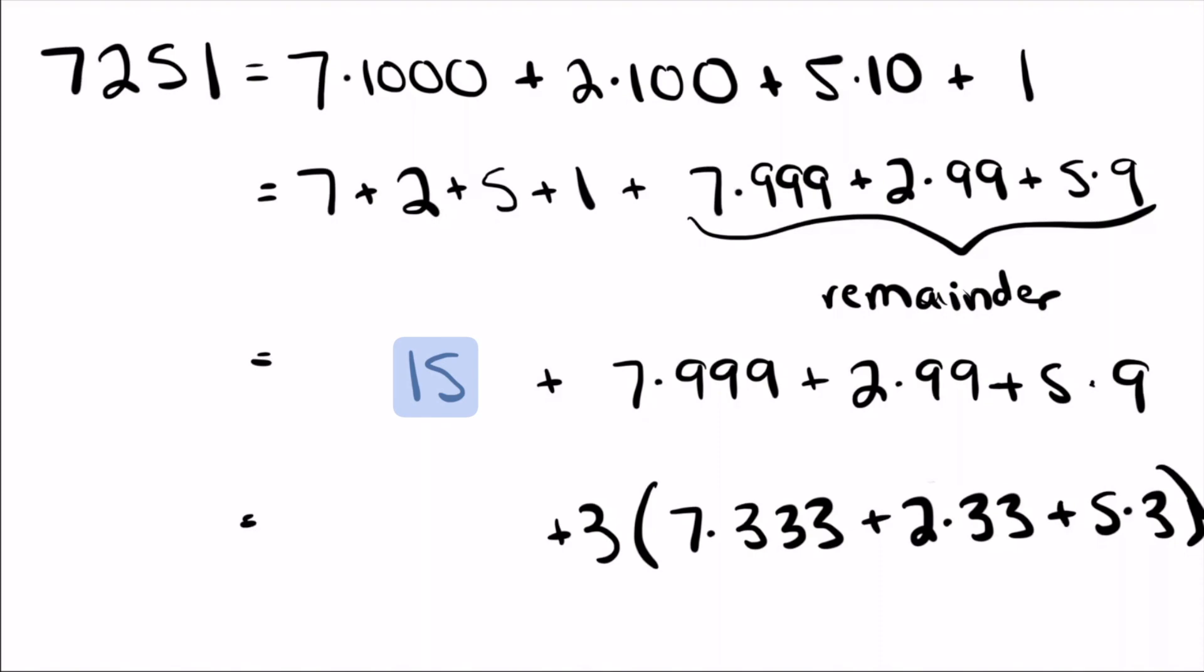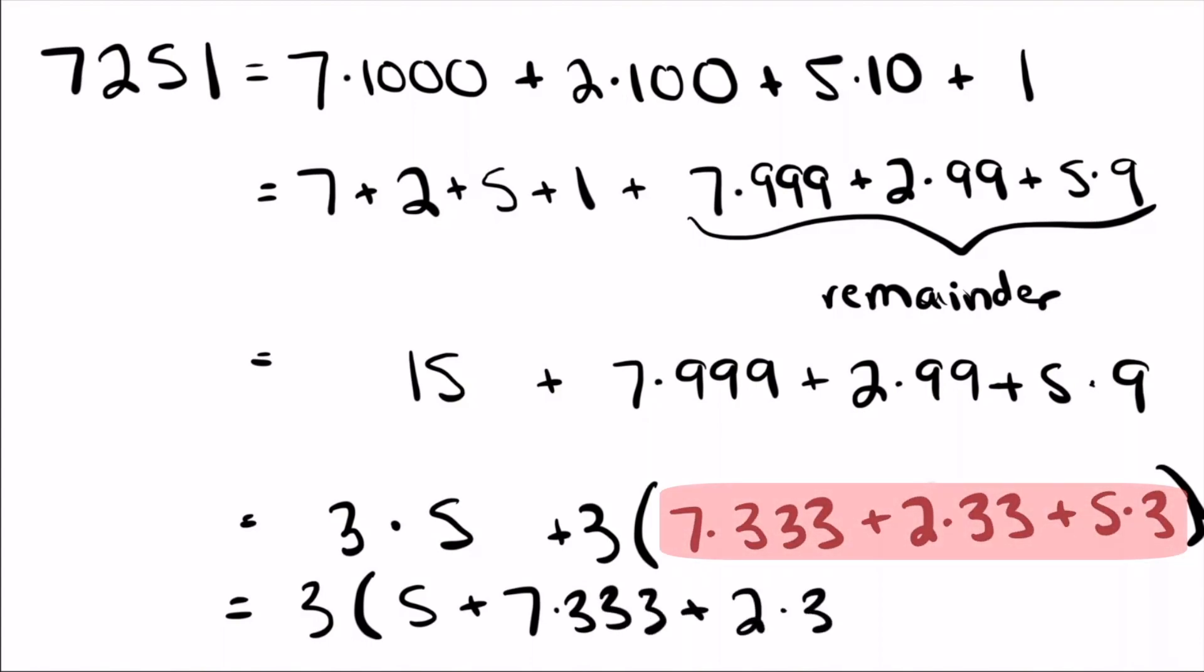So what about on the left? Can I take a 3 out of 15? Another way of saying can I factor a 3 out of 15 is saying when I added up those digits, are they divisible by 3? And it is in this case. 15 is 3 times 5. So that means I can factor out a 3. I get the 5 left over, and then all of this big thing left over from my remainder. So let's look. What does this mean? I factored out a 3. I think we can all agree the stuff inside the parentheses is a whole number. It's a bunch of whole numbers multiplied and added together, so it's also a whole number. So that means the thing on the left, 7,251, is divisible by 3.